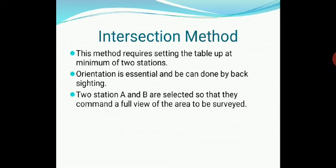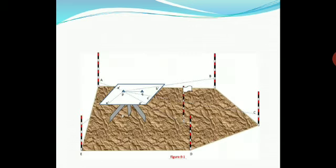The intersection method requires setting up the table at a minimum of two stations. Orientation is necessary and can be done by back-sighting. Two stations, say A and B, are selected in such a way that they can command a full view of the entire area to be surveyed, as shown in the image.